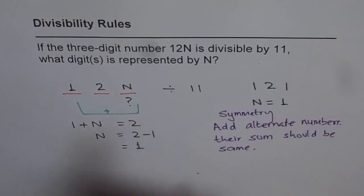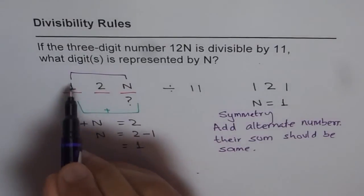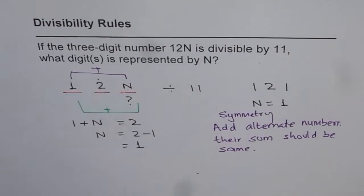Their sum should be the same. So that is the rule. Alternate numbers means you add this and this, their sum should be equal to this number.